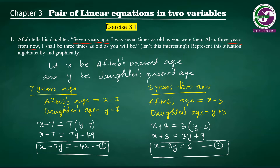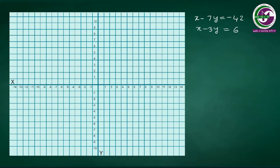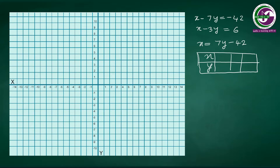Now for the graphical representation, we draw the lines for these two linear equations. Equation 1, x minus 7y equals negative 42, can be rewritten as x equals 7y minus 42. Drawing a table: when y is 5, x is negative 7; when y is 6, x is 0; when y is 7, x is 7. I will mark these points on the graph — (negative 7, 5), (0, 6), and (7, 7) — and draw the line through them.